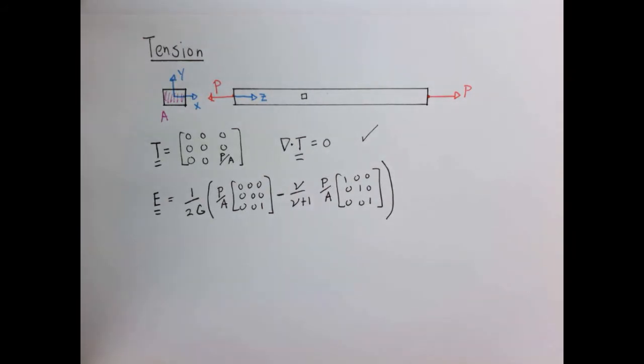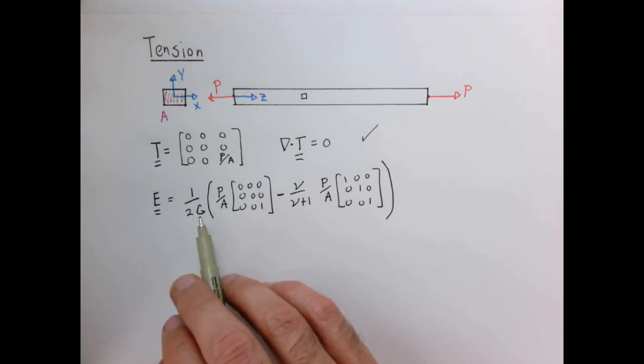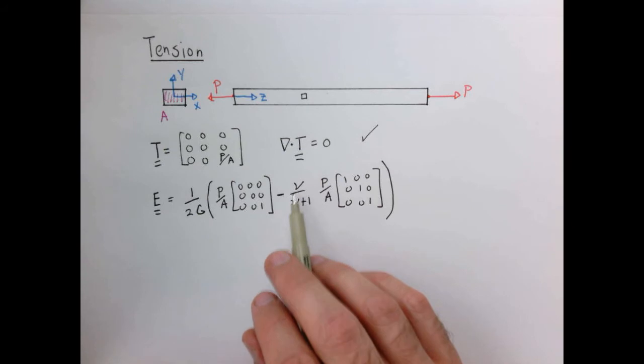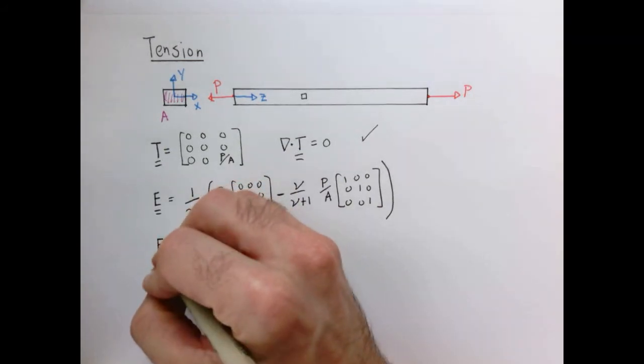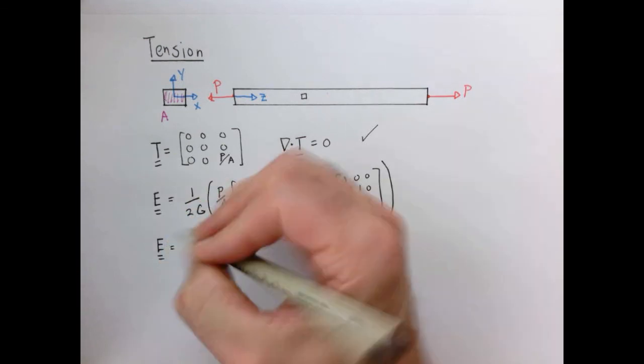And so if I simply substitute our assumption for the stress tensor into the strain tensor, I get something that looks like this. And here I factored out this common factor of P over A that's going to show up everywhere. And if we do a little bit of manipulation here and we rearrange things and we remember our relationships between G, Poisson's ratio, and Young's modulus, we could rewrite this matrix. And you should try this yourself just to believe that it's true.